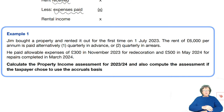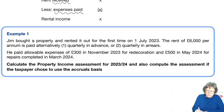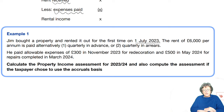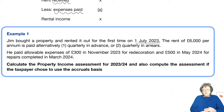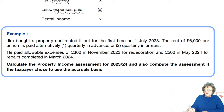Jim bought a property and rented it out for the first time on the 1st of July. This question covers both advance payments and arrears payments. The rent of £6,000 per annum means a year — it's Latin.